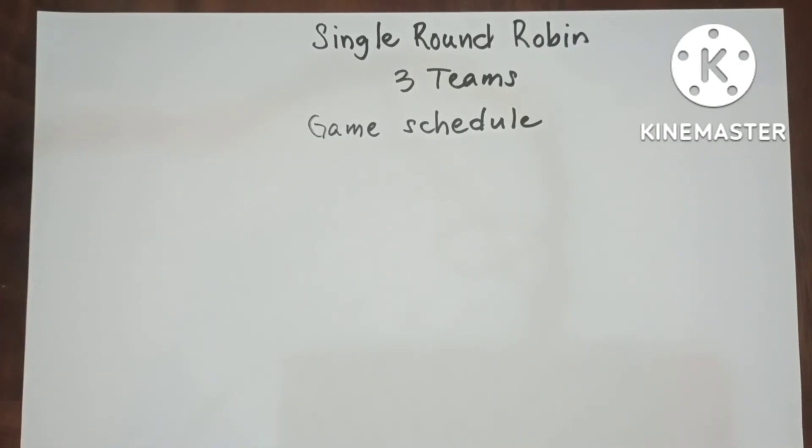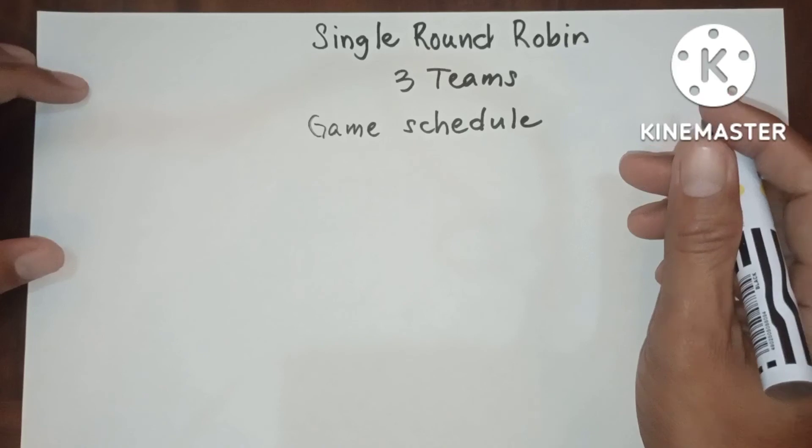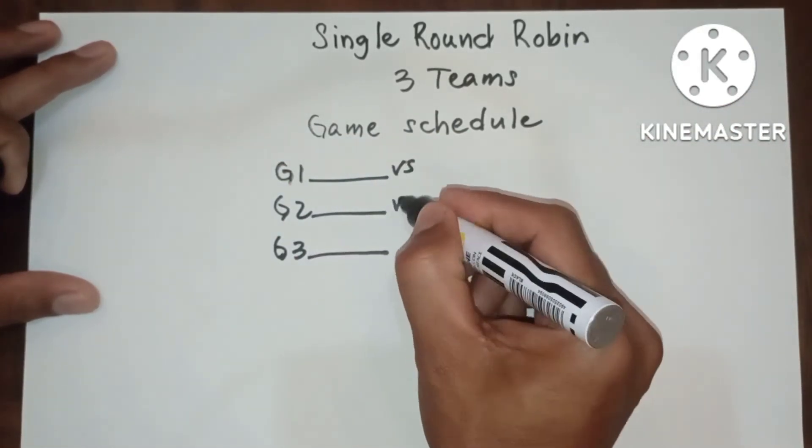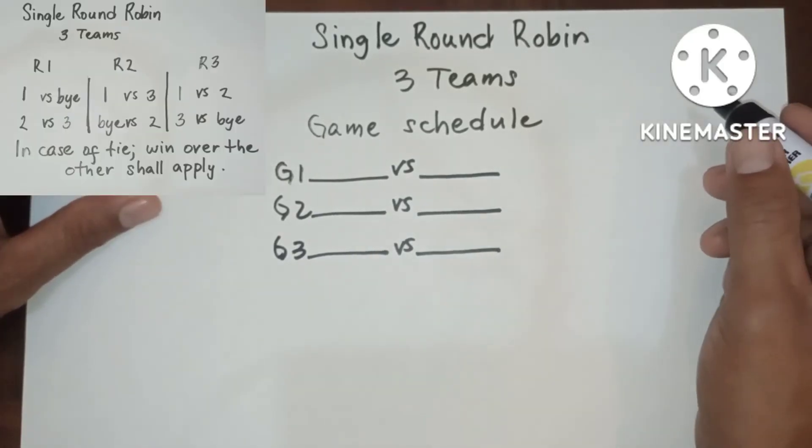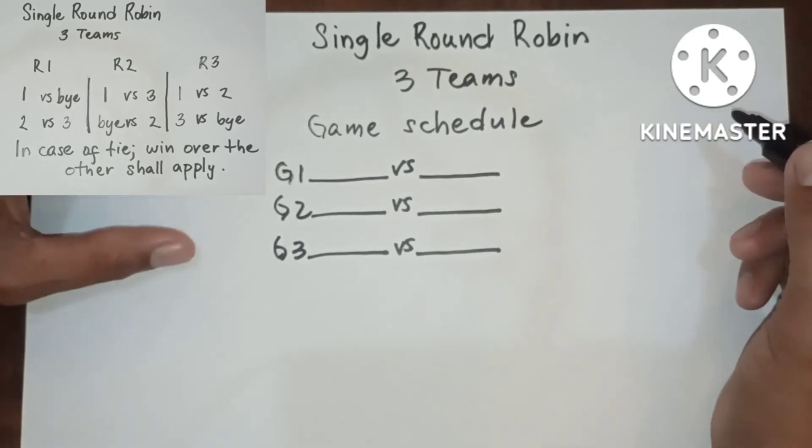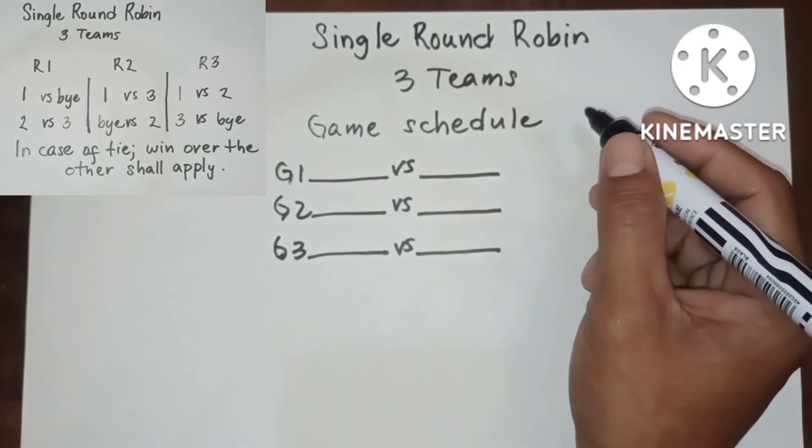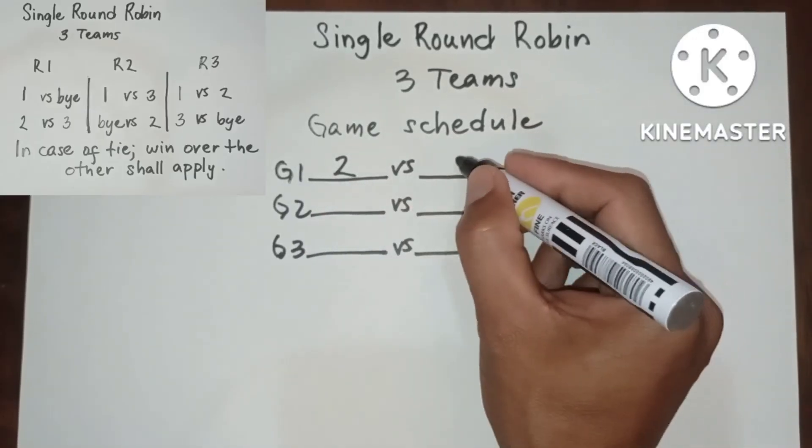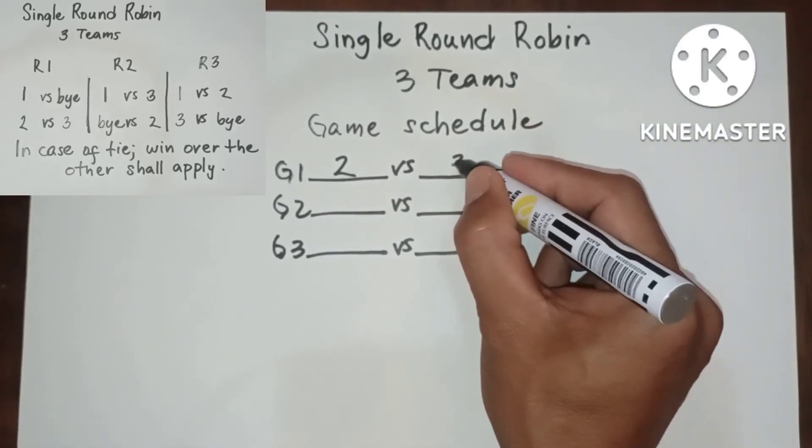In round robin, it is good to have a game schedule, so that it will be easy for the crowd or participants to follow the tournament. Since we have 3 games, in round 1, we have 2 versus 3.